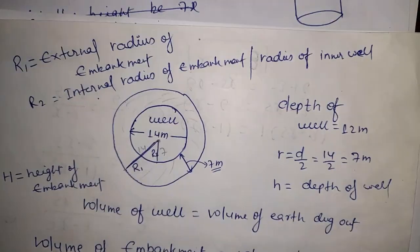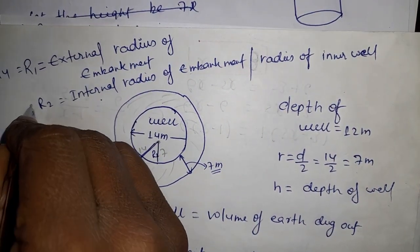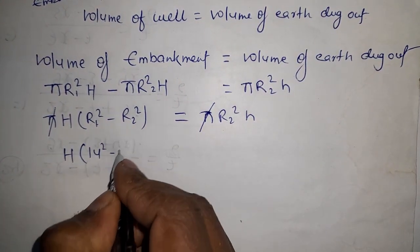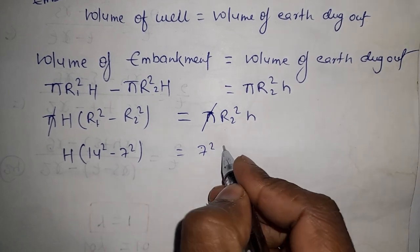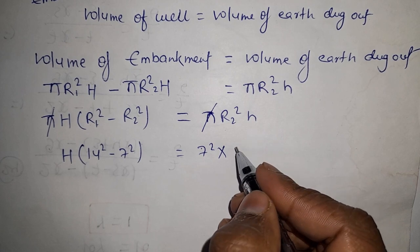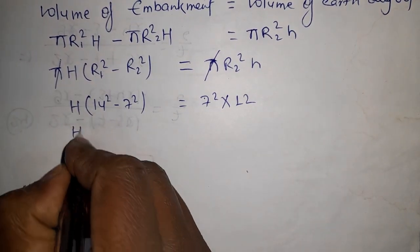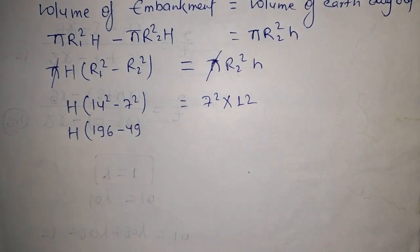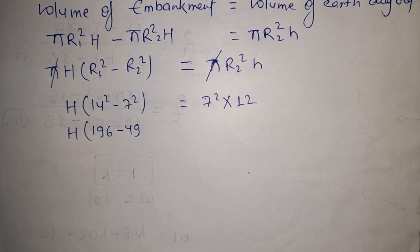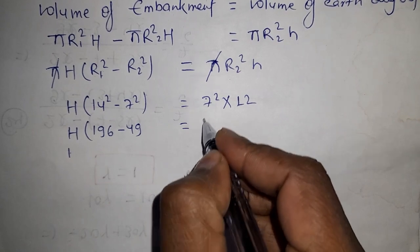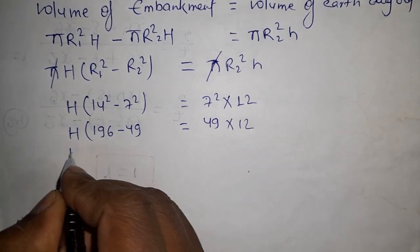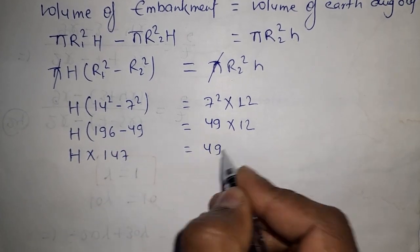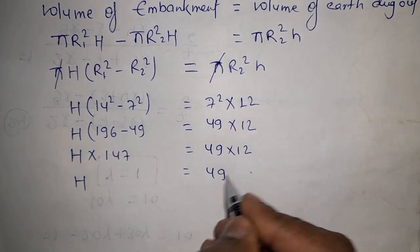So H times (R1 squared minus R2 squared) equals R2 squared times h. R1 will be 14, R2 will be 7. So H times (14 squared minus 7 squared) equals 7 squared times 12. H times (196 minus 49) equals 49 times 12. H times 147 equals 49 times 12.